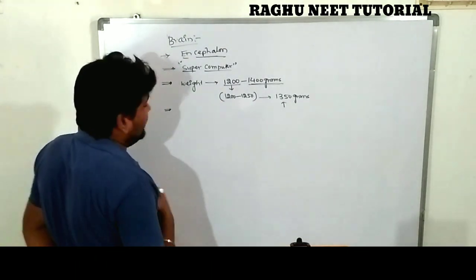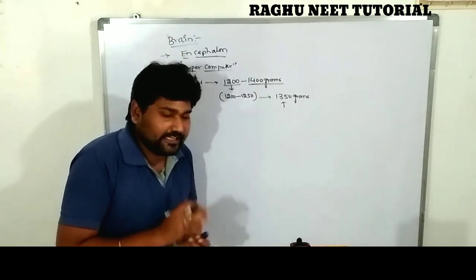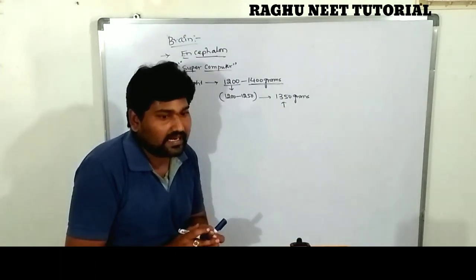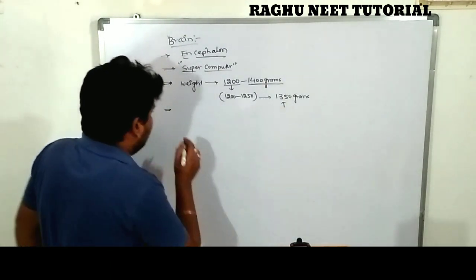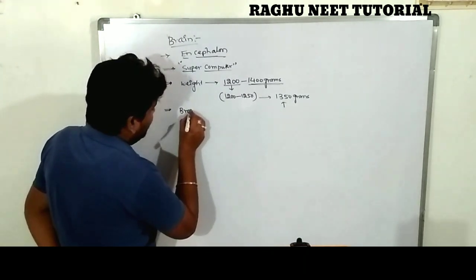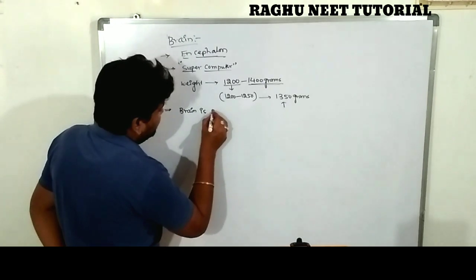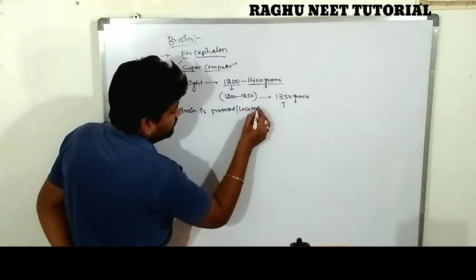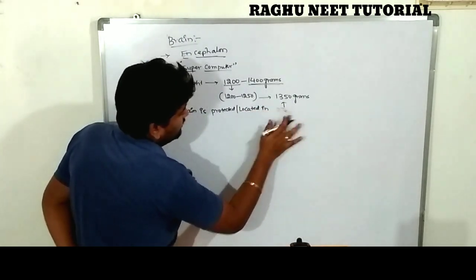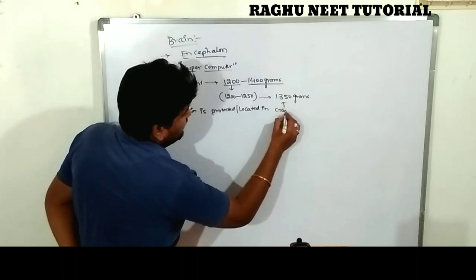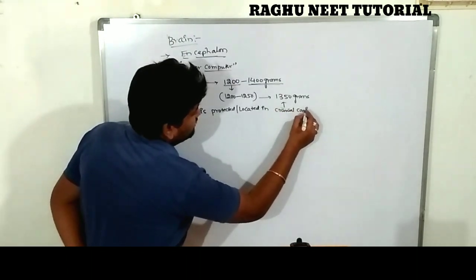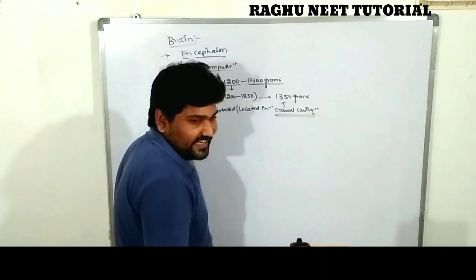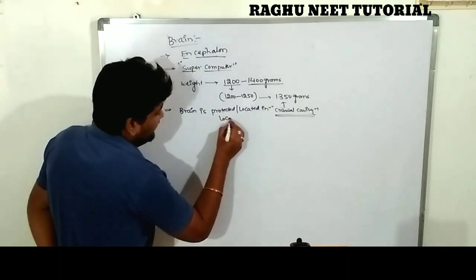The brain is completely protected by the cranium and is located in the cephalic cavity, also called the cranial cavity. The brain is protected and located inside the cranial cavity.